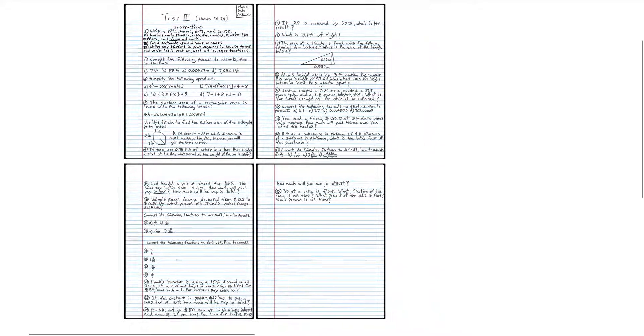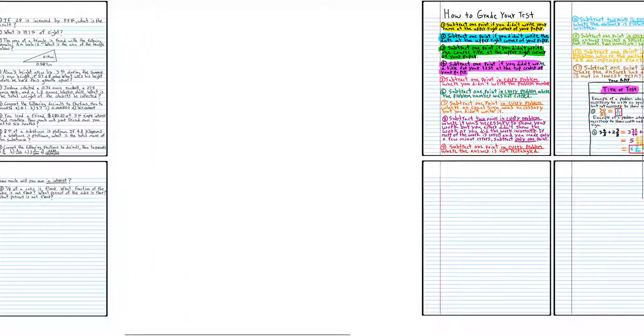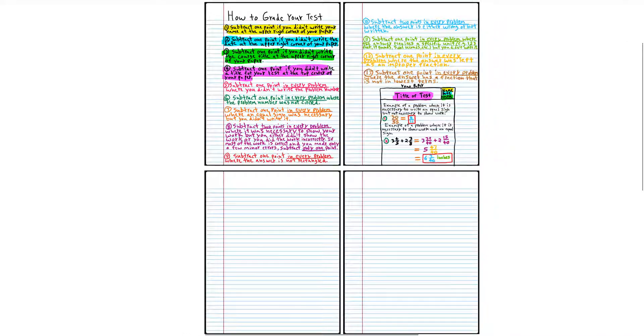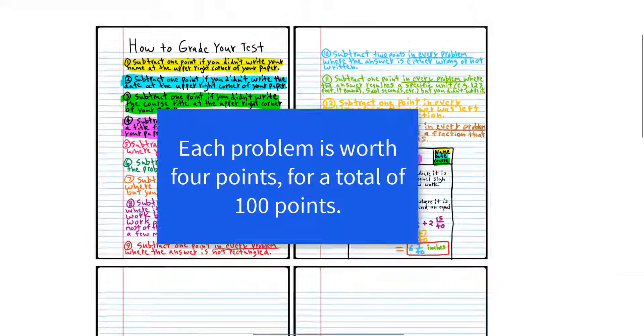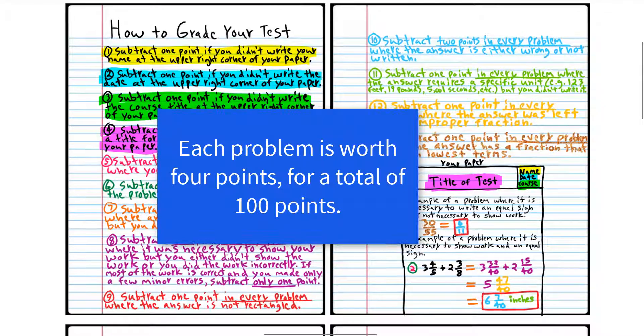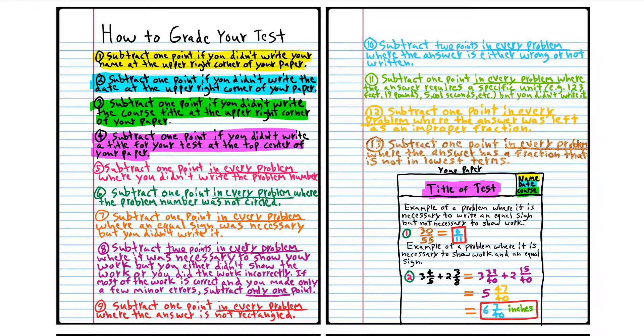All right, we're back. So you should be done with the test. And let's talk about how to grade the test. This is all stuff that we already went over for test number 2 and test number 1. Subtract 1 point if you didn't write your name at the upper right corner of your paper. Subtract 1 point if you didn't write the date. So on and so forth. So just follow these rules to grade your paper.